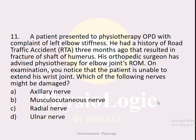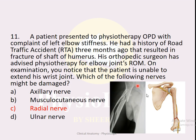MCQ number eleven: A patient presented with left elbow stiffness after a fracture of the shaft of humerus following an RTA. On examination, the patient is unable to extend the wrist joint. Options: A — axillary nerve, B — musculocutaneous nerve, C — radial nerve, D — ulnar nerve. The correct option is C — radial nerve. The radial nerve passes through the radial groove in the shaft of the humerus; fracture here can damage it, causing wrist drop due to weakness of wrist extensors.